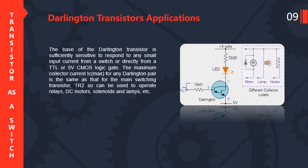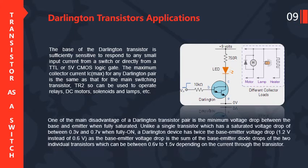Darlington transistor applications: the device is sufficiently sensitive to respond to any small input current from a switch or directly from TTL or 5V CMOS logic gates. The maximum collector current IC for any Darlington pair is the same as that for the main switching transistor TR2, and it can be used to operate relays, DC motors, solenoids, lamps, and similar loads.